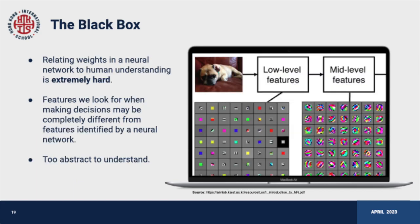The inner workings of a neural network are highly complex, making it often difficult to understand how they make predictions. You can see a visual of the features a neural network looks for when trying to identify animals — notice that they're very different from features like eyes, ears, and nose that we might look for. We can understand how neural networks work and how they're trained, and we know they make good predictions. However, it's very difficult to explain what the connections and weights between neurons mean in every prediction — in other words, we can't easily understand how they reason.